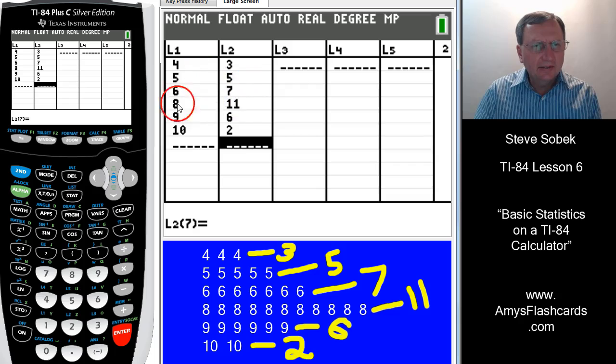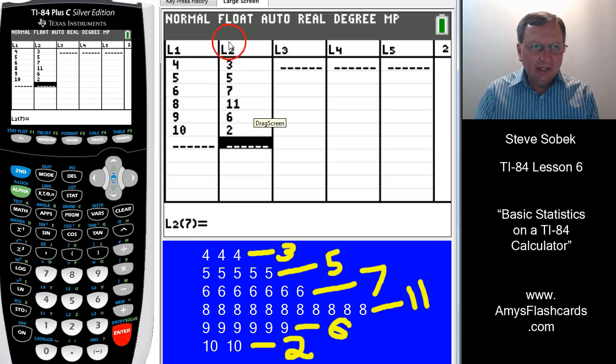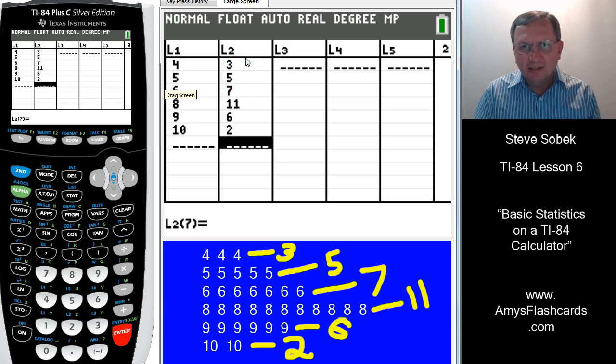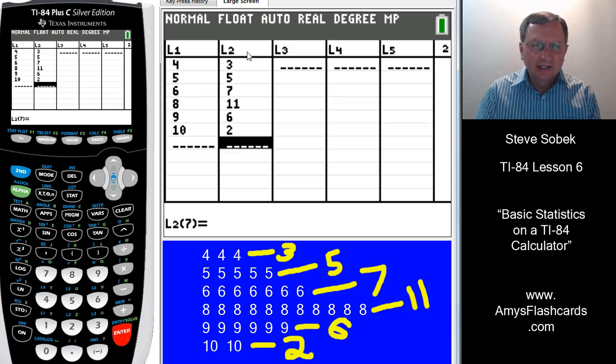Now everything is set. Will the calculator automatically look at this and say, these are the data values, and list 2 must be the frequency? Maybe, maybe not, but we're going to make sure that it does. We're going to be on the alert. And with the newest calculators, it's easier to be alert with that. The older TI-84 requires additional caution.